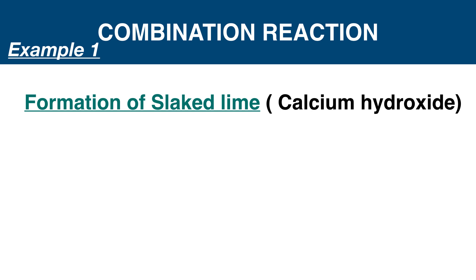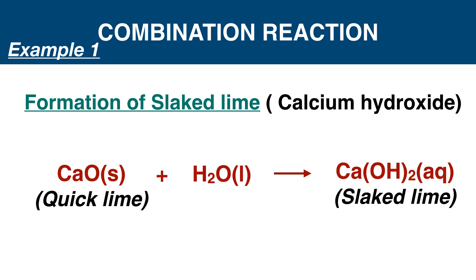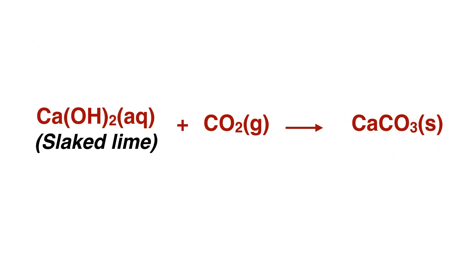Example number one: formation of slaked lime, chemical name calcium hydroxide. Here two reactants - calcium oxide and water - react to form a single product, calcium hydroxide. Slaked lime is mainly used to decrease acidity in soil and is used as whitewash in low-cost applications. While we use slaked lime for whitewash, calcium hydroxide reacts with carbon dioxide in the atmosphere and forms calcium carbonate. This calcium carbonate gives a shining appearance to the wall.